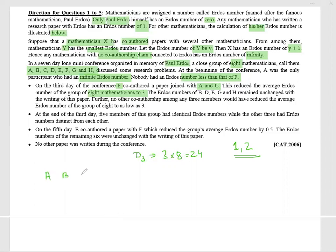Let me write the names A, B, C, D, E, F, G, H. I'm assuming F's starting Erdős number was two. The members B, D, E, G remain unchanged with the writing of this paper. No other co-authorship among the three-member group would have reduced the average Erdős number of the group of eight as low as three, so nobody can go beyond three.